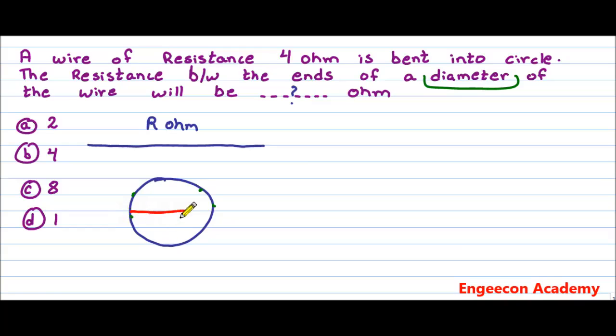So let us take a diameter and we give this point A and we give this point B. As we know that resistance is directly proportional to length. In this case, for example, the length is half.